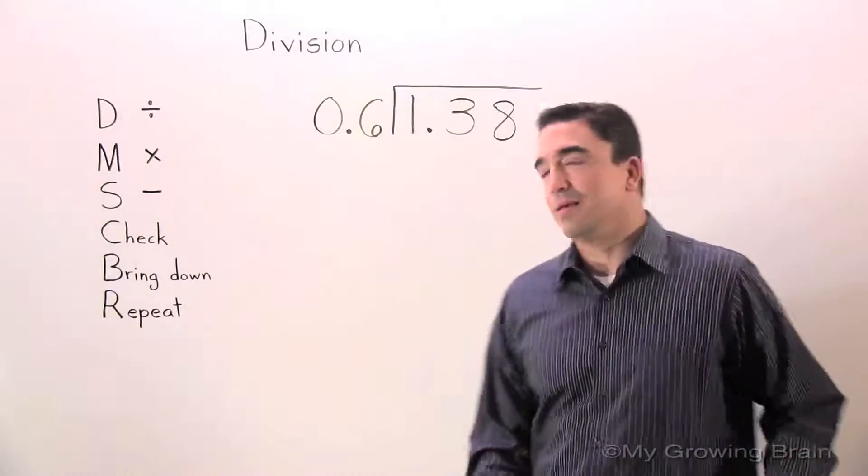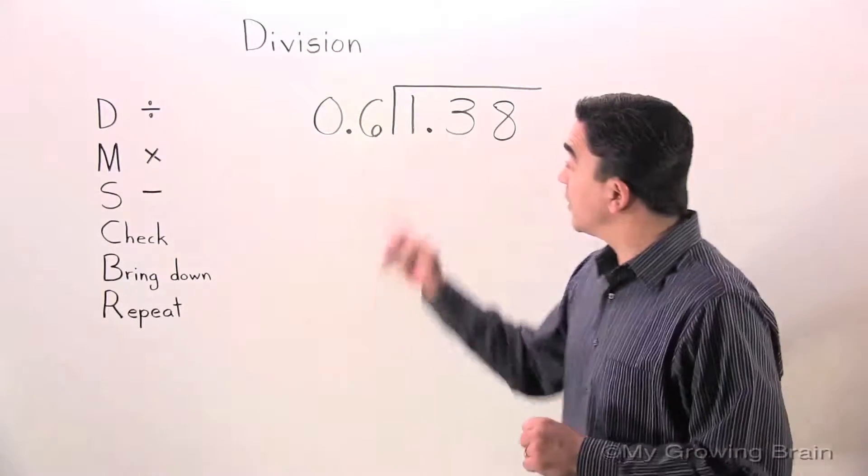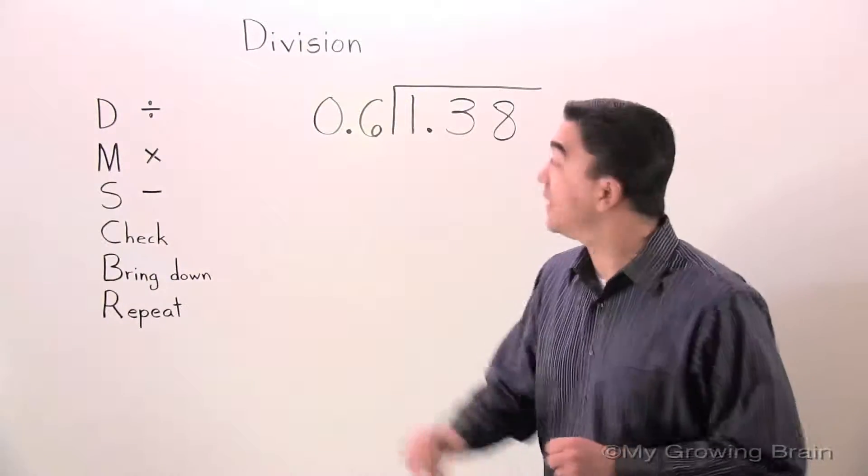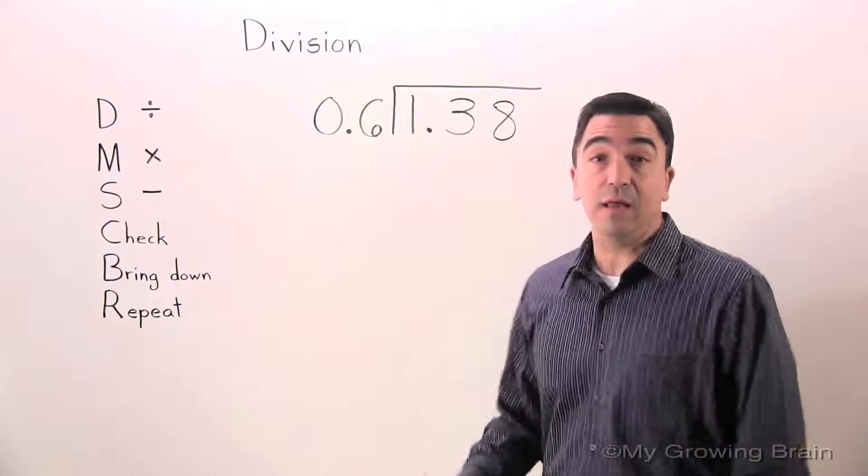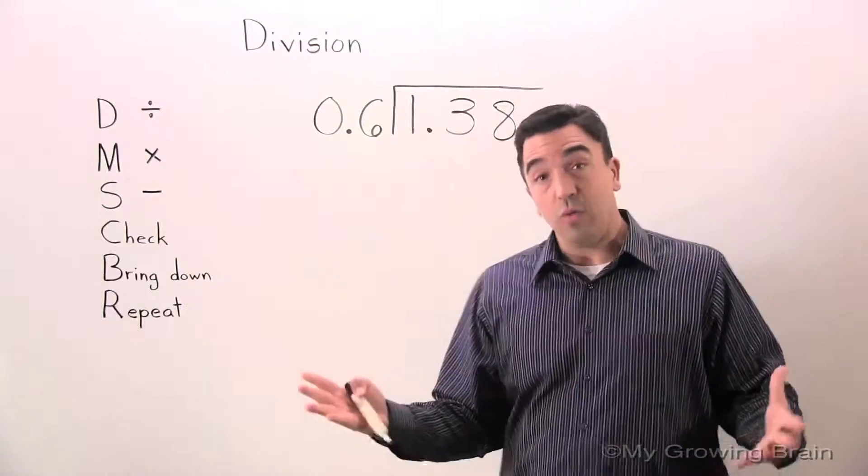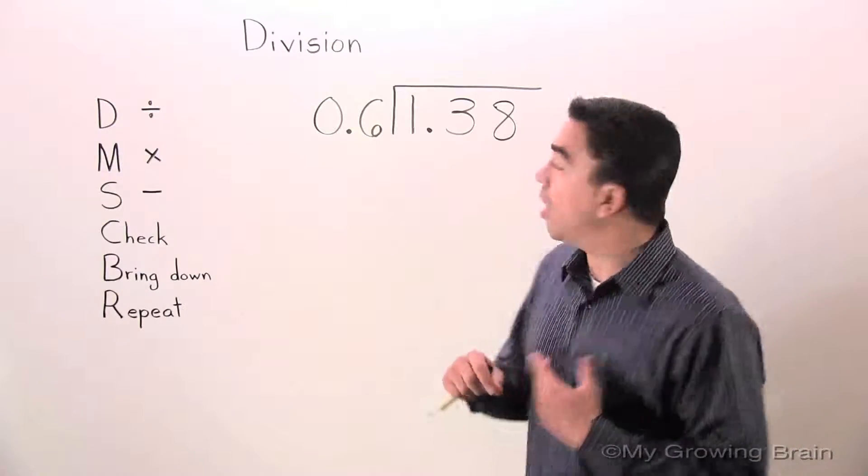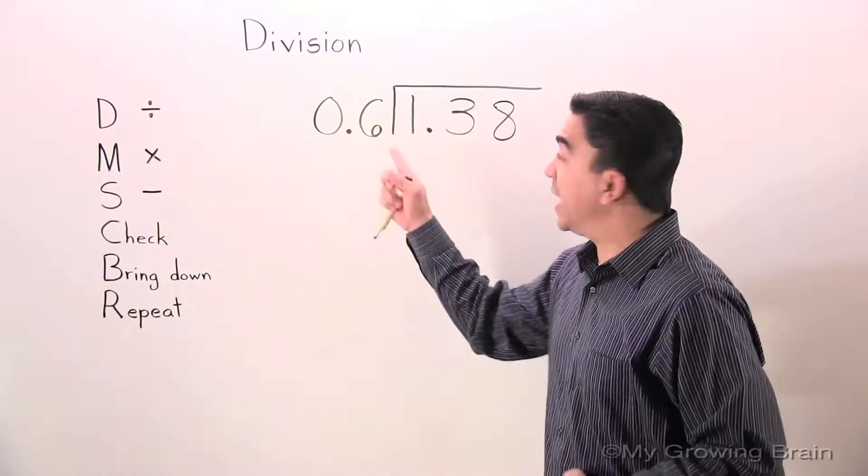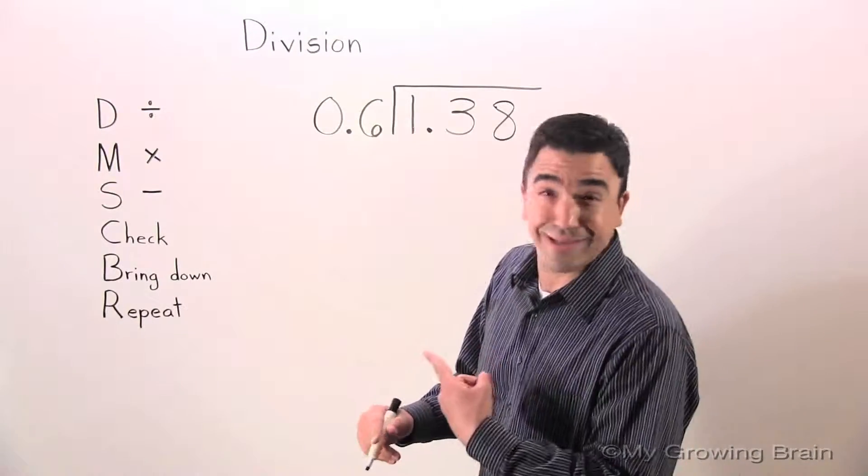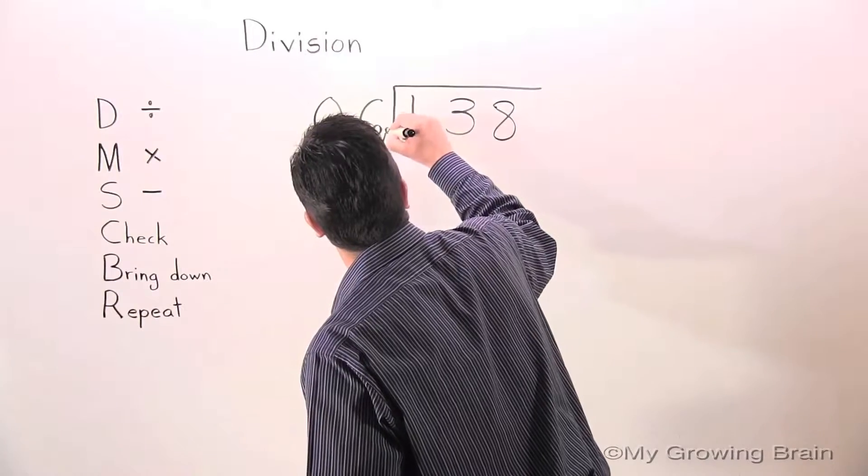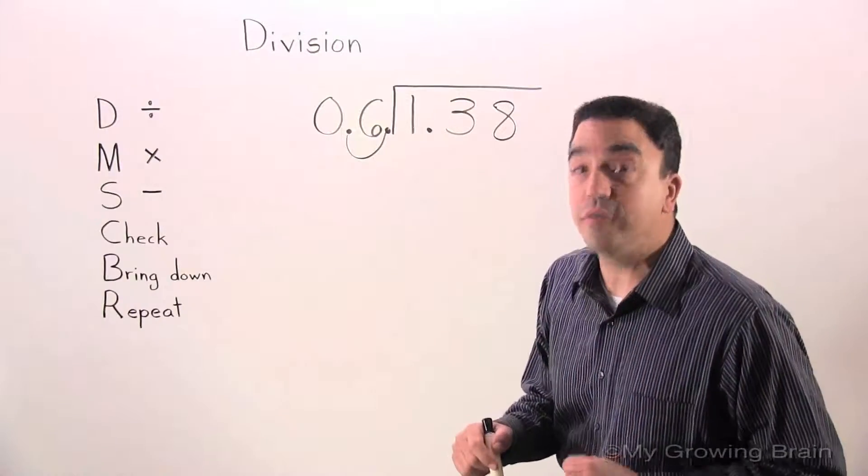All right. First thing I want to observe is the divisor. There is a decimal point in the divisor. We cannot have that when we're dividing decimals. So a little trick that I like to do is move the decimal all the way to the right to make our divisor a whole number. Watch. All right, that is the whole number six.